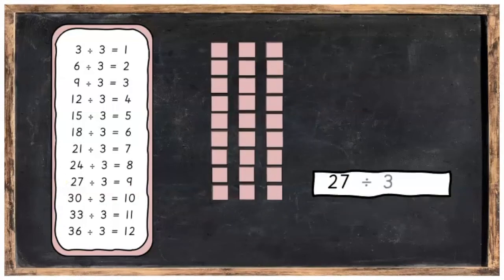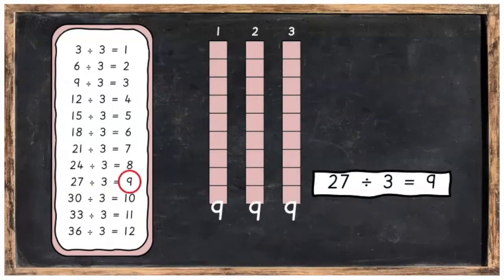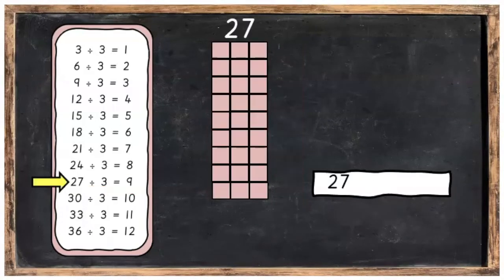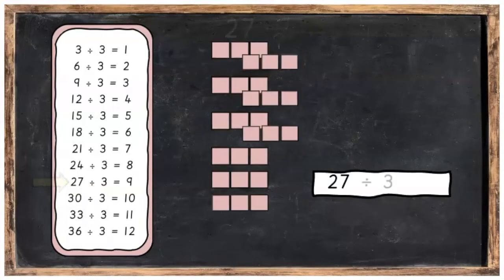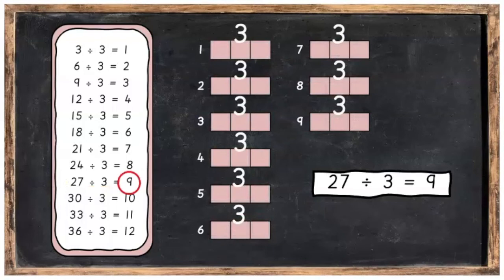27 divided into 3 equal parts, you're going to get 9 in each part. Or 27 divided into 3's and you're going to get 9 in each part.